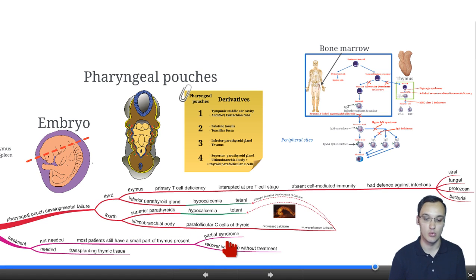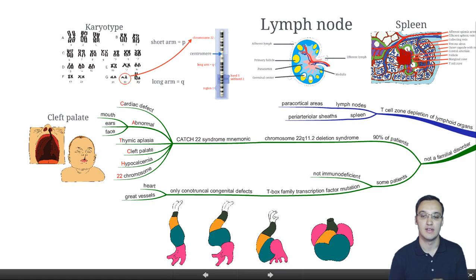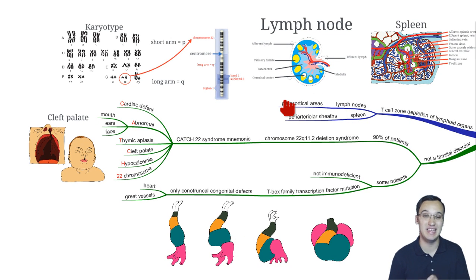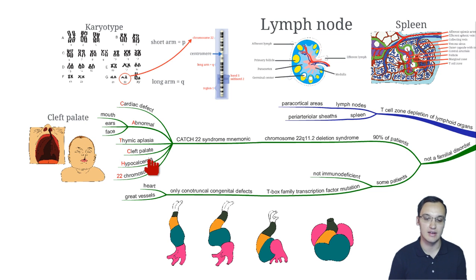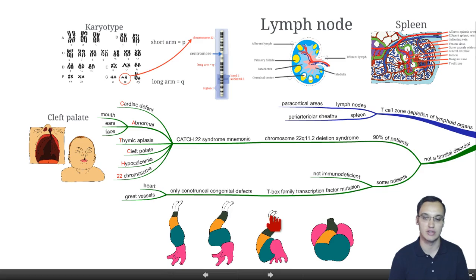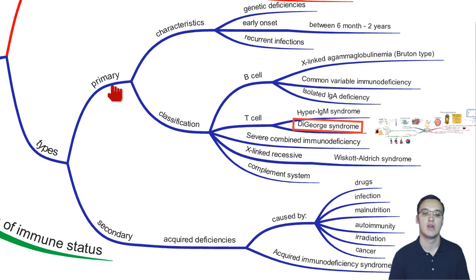The morphology shows depletion of T cells in the paracortical areas of the lymph node and in the peri-arterial sheet of the spleen. 90% of patients have chromosome 22q11.2 deletion syndrome — remember the CATCH-22 mnemonic with cleft palate — and some babies will also have a conotruncal congenital cardiac defect. DiGeorge syndrome is classified as a primary T cell deficiency with these characteristics.